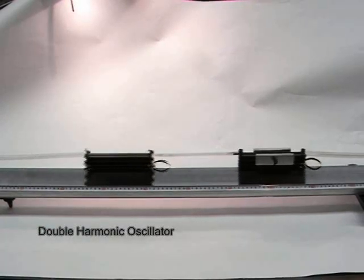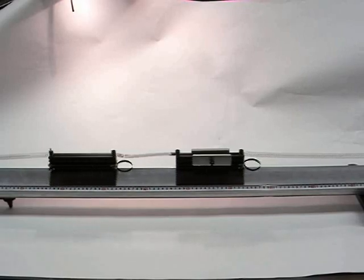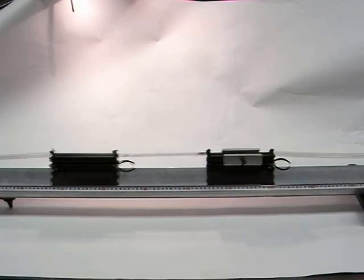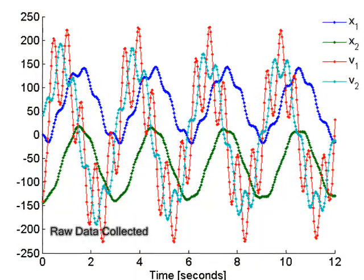Shown here is an air track configured as a double harmonic oscillator. The motion tracking cameras record the horizontal positions of the air track's two cars over time.